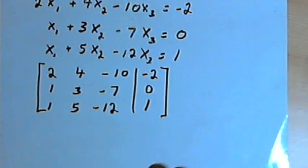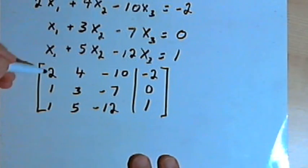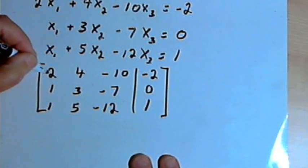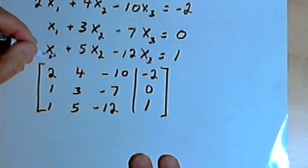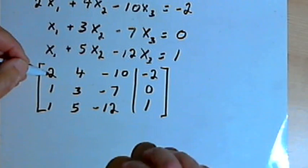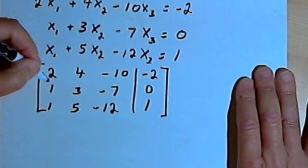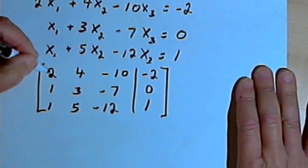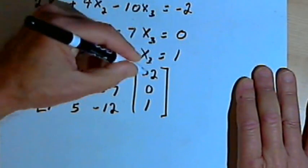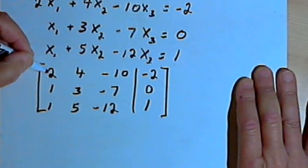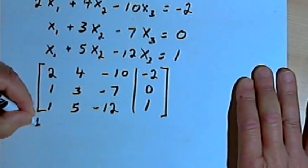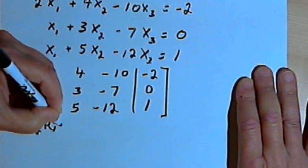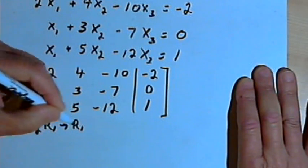When we do Gauss-Jordan elimination, we want to start with column 1. We want to get the element in position row 1, column 1 to be a 1. Right now it's 2. We're going to turn it into a 1 by multiplying it by its reciprocal, which means we have to multiply the entire row by that reciprocal. The reciprocal of 2 is one-half, so one-half times row 1 will become the new row 1.